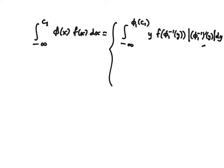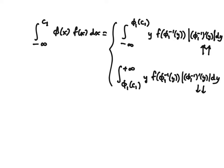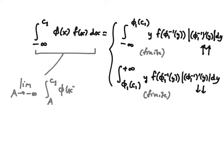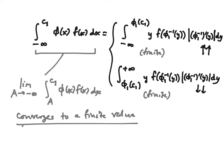In both cases — green and red — these integrals are finite and converge, because we know already that this limit as a goes to minus infinity of the original integral is finite by the main assumption. And both cases can be written in the same way using the minimum of φ_1 of c_0 and φ_1 of c_1 on the bottom, and the maximum of the same two values on top. The reason this works is that c_0 is minus infinity by definition.